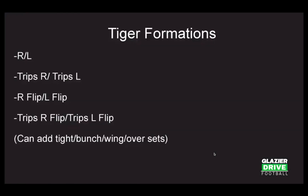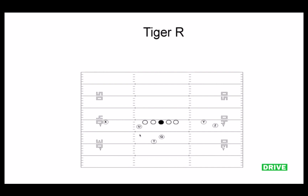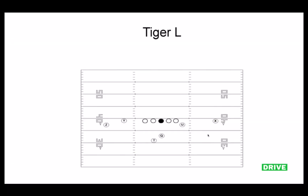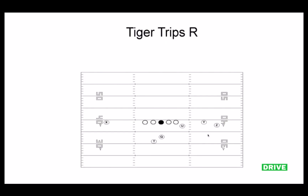Tiger — the U-back. It's just like Dog. The U-back goes away from the call. Tiger L works the same way. And you can go Tiger Trips Right — some could argue that's more of a true trips look, because you've got your U-back on the same side with your Y and your Z.